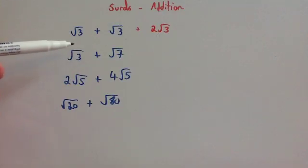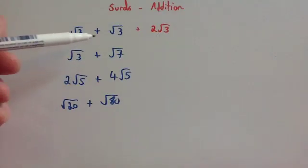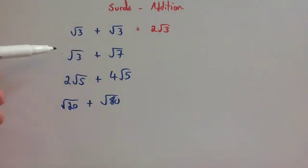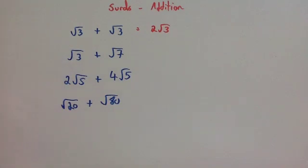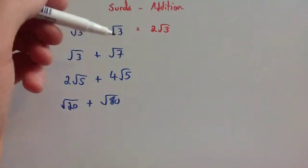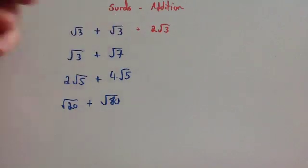Root 3 plus root 7 — you can't add these because they're different surds. You've got root 3 and root 7, you can't add them together. So that one you can't add.